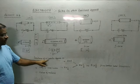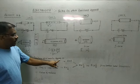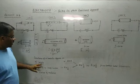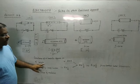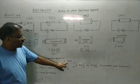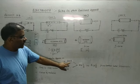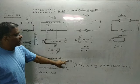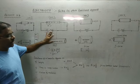From this we conclude that resistance of a conductor depends on length. If length increases, resistance will increase.